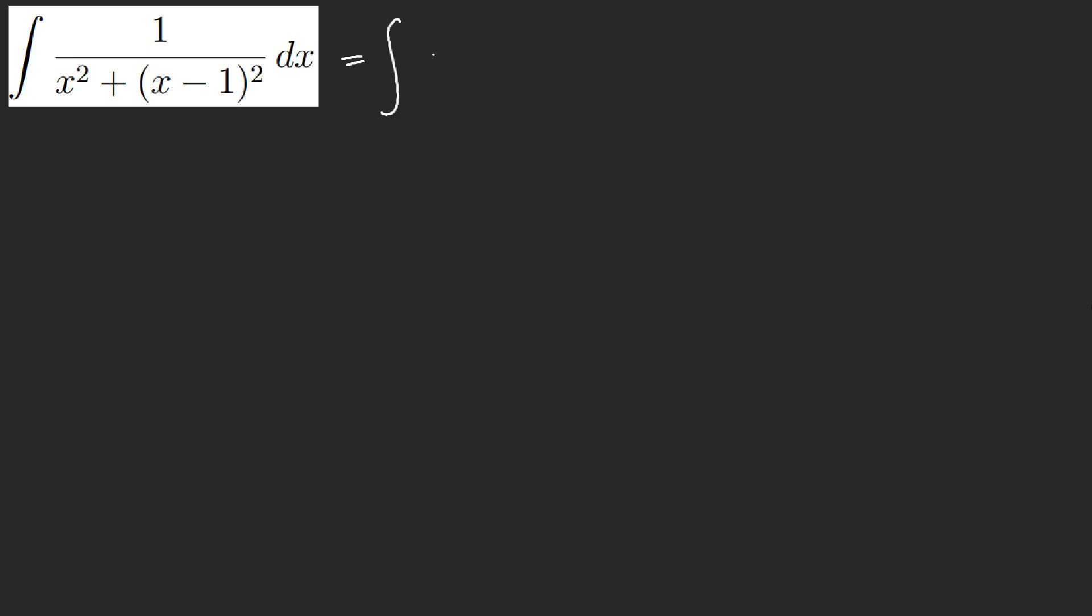Right, so we're going to go ahead and quickly do that. dx, we get x squared plus x squared minus 2x plus 1, and this whole thing is going to equal to 2x squared minus 2x plus 1, right.